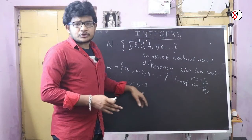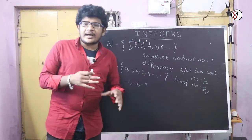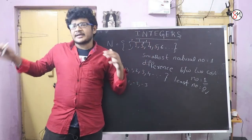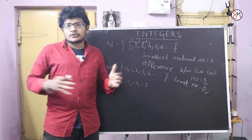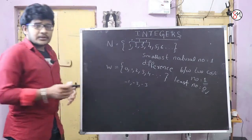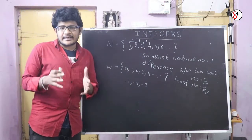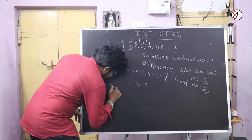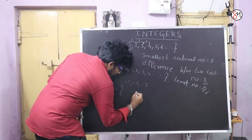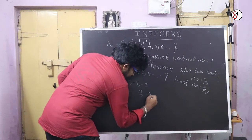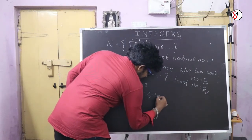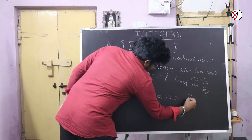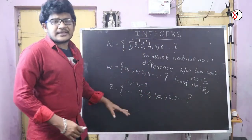So integers include minus 1, minus 2, minus 3, 0, 1, 2, 3, 4, and so on — these are called integers. Integers are denoted by Z. Therefore Z is equal to: so on, minus 3, minus 2, minus 1, 0, 1, 2, 3, so on. This is called integers.